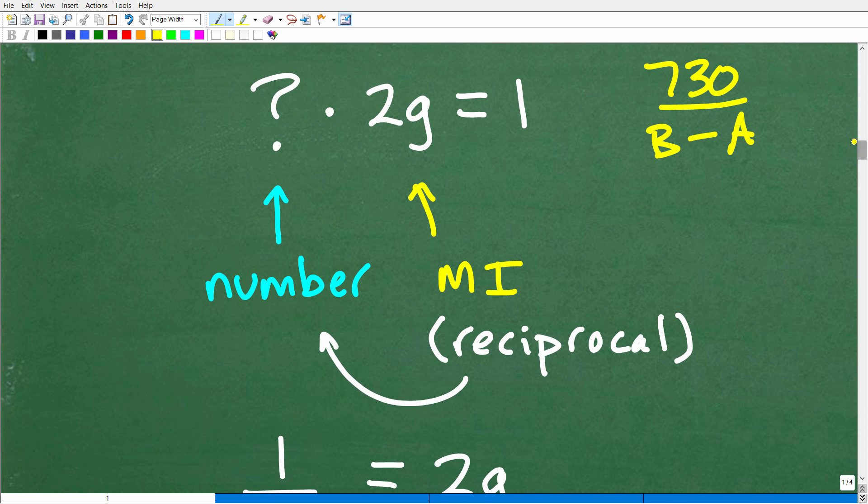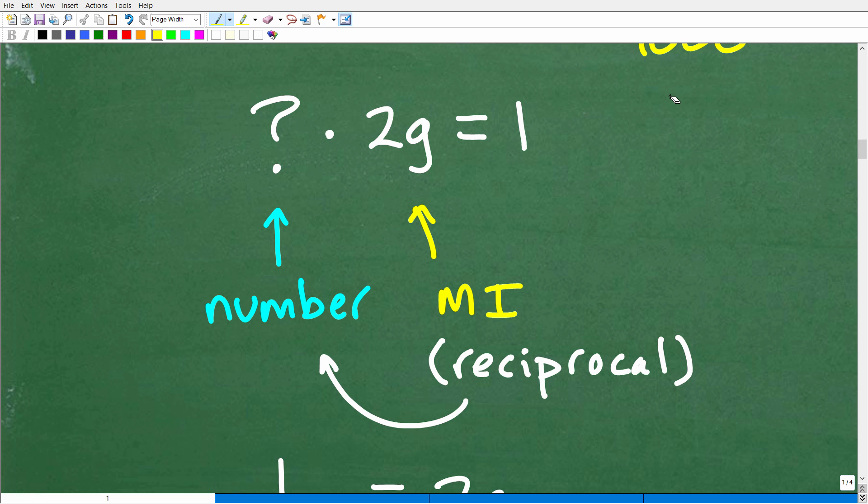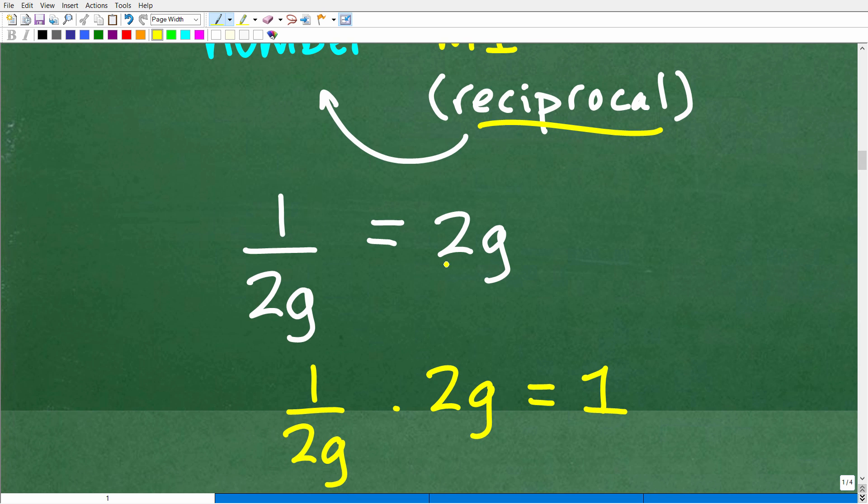Now that we understand the multiplicative inverse, right? So, let me kind of erase all this right here. So, the question is, okay, 2G times what is equal to what? Well, this implies that we are talking about the multiplicative inverse. So, what is the multiplicative inverse of 2G? Well, we have to find the reciprocal of 2G. So, we need to think of 2G as a fraction. So, we'll put that over 1. So, the reciprocal is, we're going to put the 1 as the numerator and the 2G as the denominator. So, 1 over 2G is the multiplicative reciprocal.